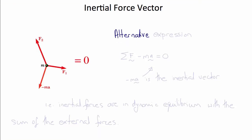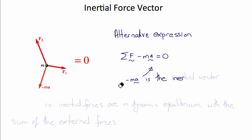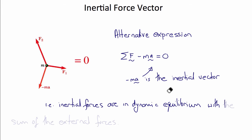An alternative and entirely equivalent way of thinking about Newton's second law is to say that the sum of the external forces is balanced by ma, so sigma F minus ma equals zero. Expressed this way, we call minus ma the inertial vector. In other words, the inertial forces are in dynamic equilibrium with the total of the external forces. So either the sum of the external forces gives rise to acceleration, or the inertial forces are balanced by the external forces.